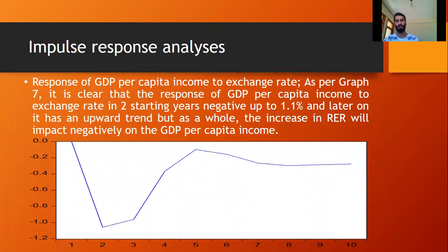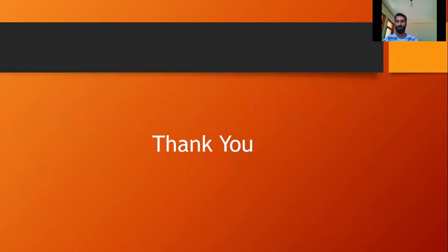Finally, we conducted impulse response analysis showing how the exchange rate will affect GDP per capita income of China over the next 10 years. The response of GDP per capita income to exchange rate shows that in the first two starting years it is negative, going down to approximately negative 1.1 percent, and later it has an upward trend. But as a whole, an increasing exchange rate of RMB will impact negatively on GDP per capita income of China. Thank you so much for the opportunity and your time. It was nice to be part of this conference.